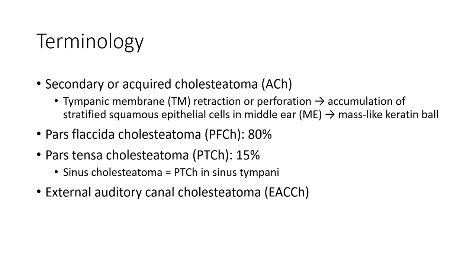Acquired Cholesteatoma (ACH) secondary to tympanic membrane retraction or perforation causes accumulation of stratified squamous epithelial cells in the middle ear, creating a mass-like keratin collection. Acquired cholesteatoma: pars flaccida cholesteatoma (PFC) accounts for 80%, pars tensa cholesteatoma (PTC) 15%, and sinus cholesteatoma — PTC in the sinus tympani — accounts for the remainder.